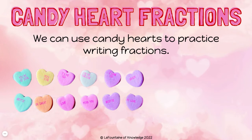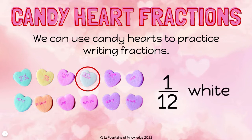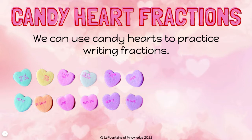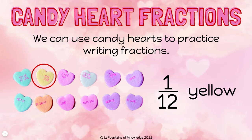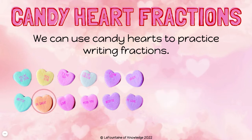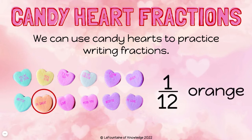We can use candy hearts to practice writing fractions too. Let's take a look at what fraction of our hearts are white. I have one white candy heart and twelve total candy hearts, so one out of twelve, or one twelfth, of my candy hearts are white. I also have one yellow candy heart, so one twelfth are yellow and one twelfth are also orange.